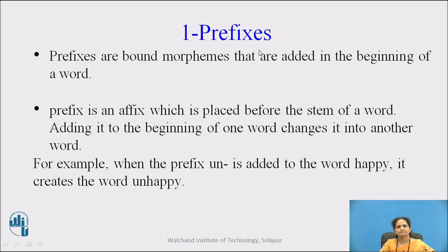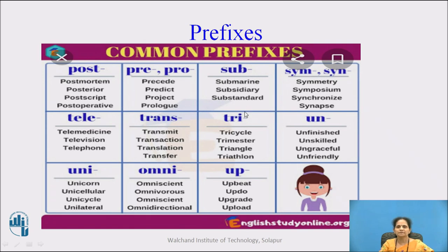So, the first one is prefix. Prefixes are bound morphemes that are added at the beginning of a word. A prefix is an affix which is placed before the stem of a word. Adding to the beginning of one word changes it into another word. For example, when the prefix un- is added to the word happy, it creates the word unhappy. Common prefixes include post-, pre-, pro-, and sub-. These are various examples of prefixes.